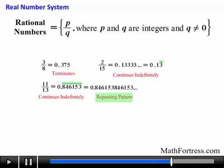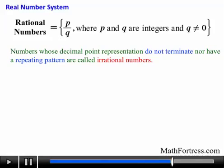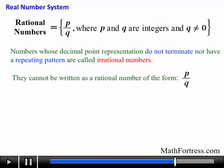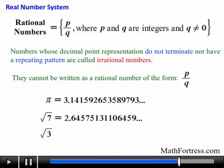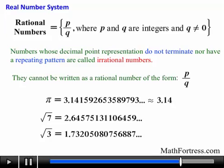It turns out that there are actually some numbers whose decimal point representation do not terminate or have a repeating pattern. These numbers are called irrational numbers. They cannot be written as a rational number of the form p over q. These are numbers like pi, the square root of 7, and the square root of 3. The decimal representation of these numbers do not have a nice pattern that they follow. For the most part they are rounded off when we need to use them in calculations.